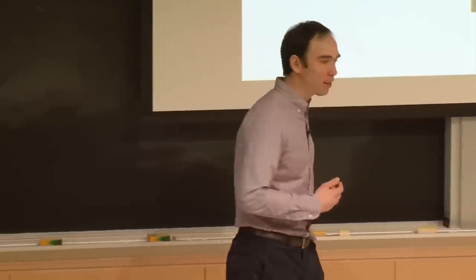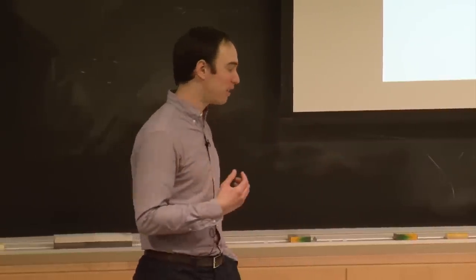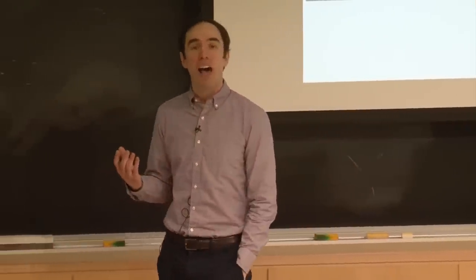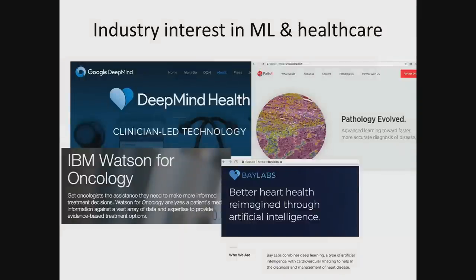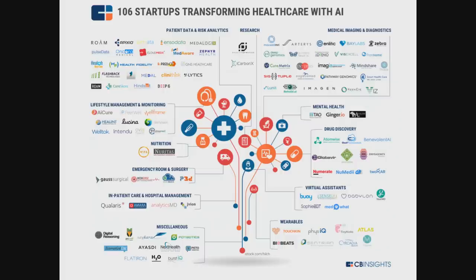All of this coming together — data availability, advances in machine learning, and the huge potential financial gain and social impact in healthcare — has not gone unnoticed. There's a huge amount of industry interest: from DeepMind Health and IBM Watson to startup companies like Bay Labs and Path AI here in Boston, all trying to build the next generation of ML-based tools for healthcare. There's been billions of dollars of funding in recent quarters toward digital health, with hundreds of startups focused specifically on using AI in healthcare.